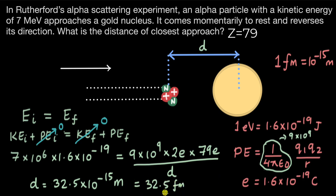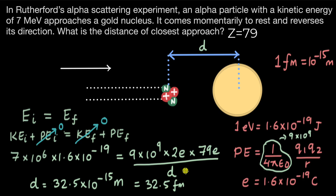This distance of closest approach tells us something important: the size of the target nucleus — in this case gold — must be of the order of 10⁻¹⁵ meters. It cannot be more than that; it cannot be 10⁻¹⁴ or 10⁻¹³. If the radius of the nucleus were of the order of 10⁻¹⁴ or 10⁻¹³, the distance of closest approach would have been greater. If we increase the size of the nucleus, the alpha particle will not come as close — it will reverse much sooner, so D would increase. The distance of closest approach gives us some idea about the size of the nucleus, but does not accurately tell us the exact radius. There are other experiments to figure out the radius.